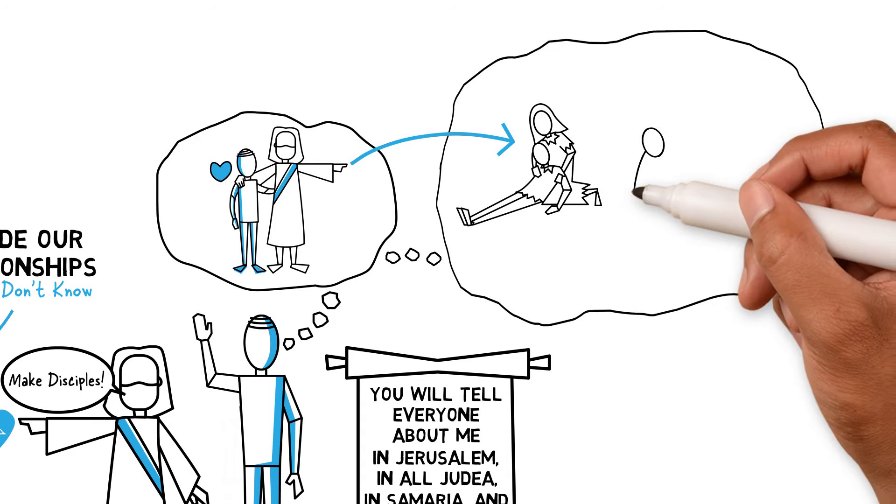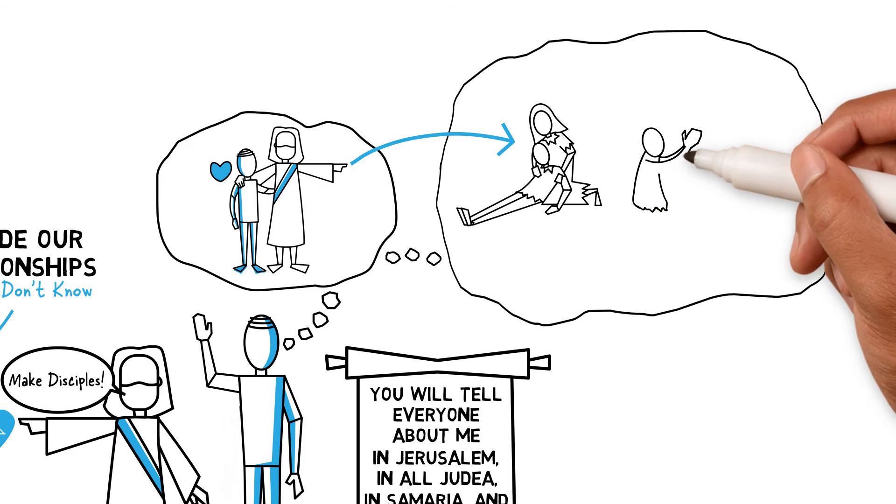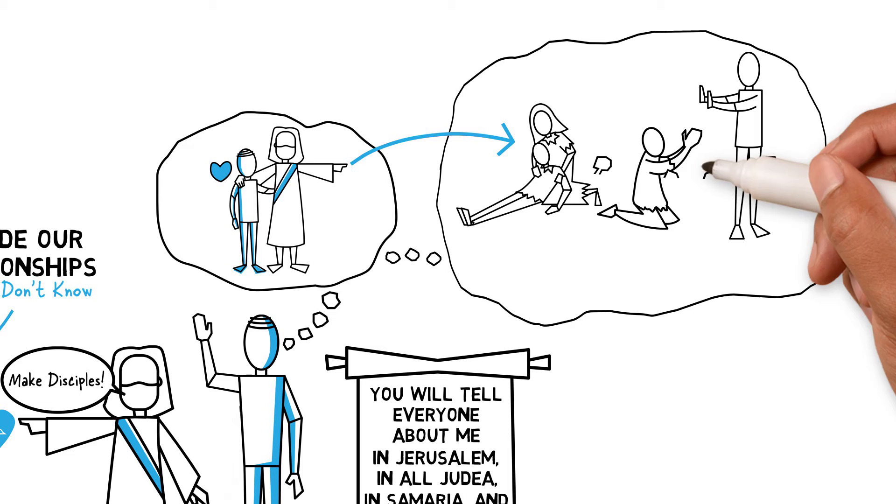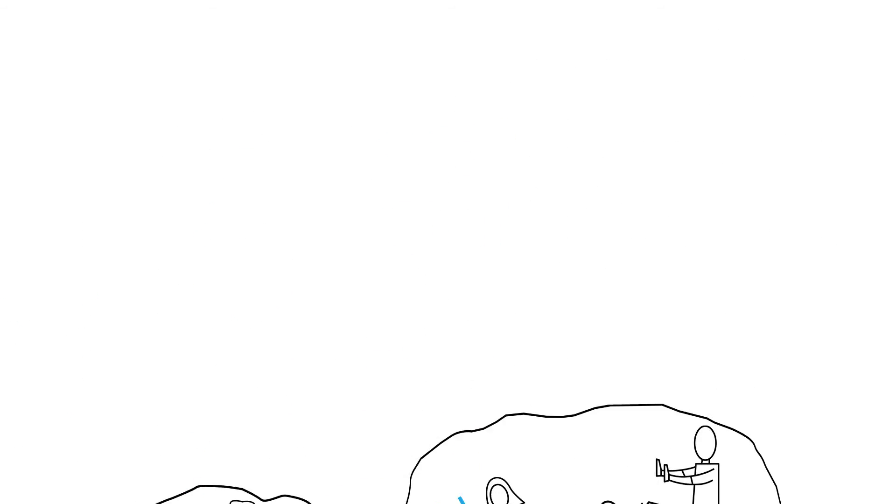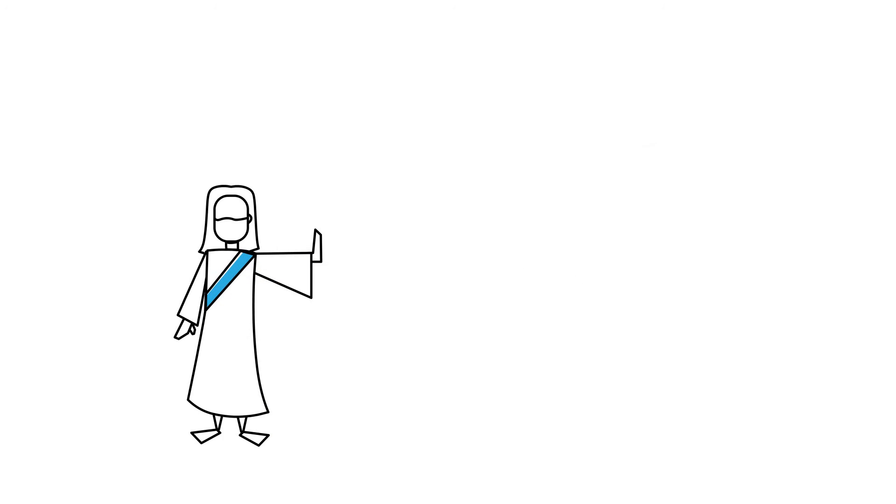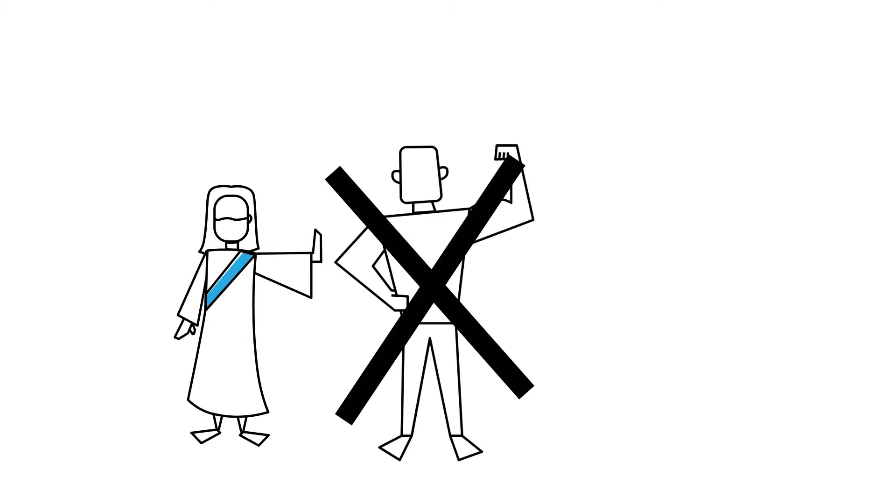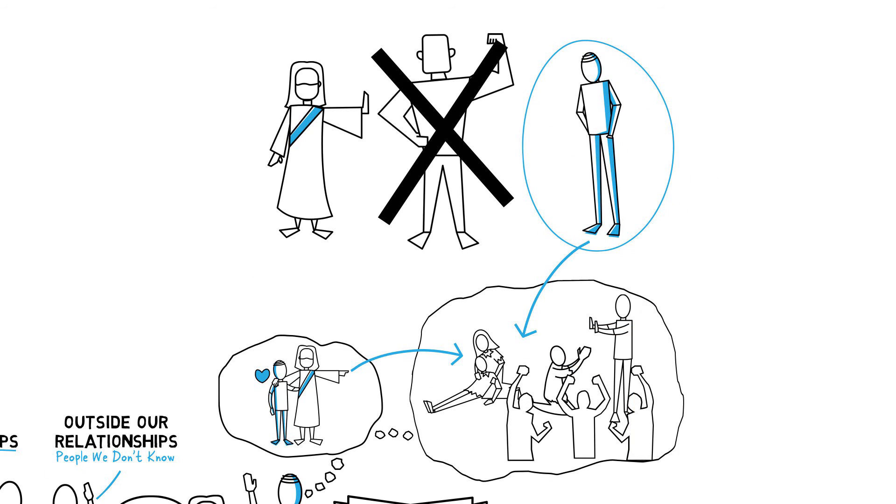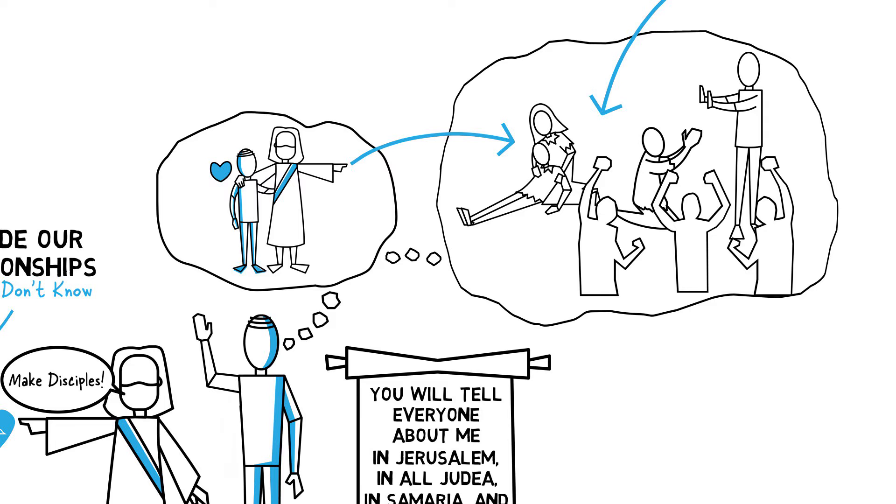God commands us to go. And part of going is to go not just to those who are close, but also to those who live in the spiritually darkest corners of the world. People who sometimes have never even heard the name Jesus. God's word says, God opposes the proud, but gives grace to the humble. As followers of Jesus, we must give grace as he gives it to the humble, to the desperate, and to the lost.